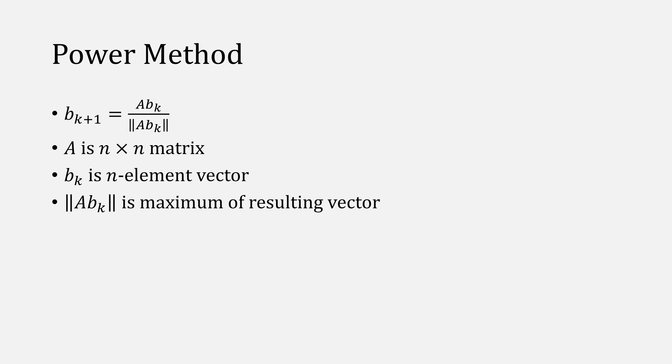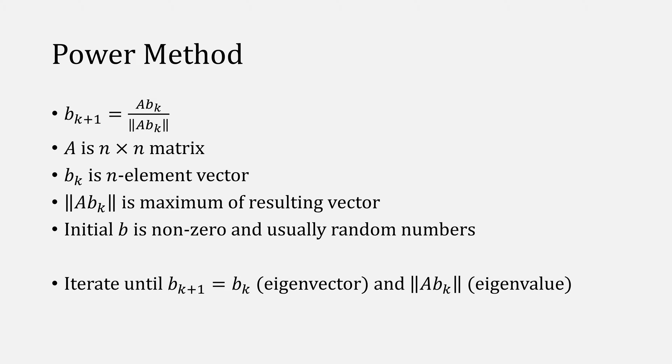Let's look at a common approach to finding eigenvalues, which is called the power method, which is given by this function here. Don't worry, we're going to go through some examples. Here, a is an n by n matrix, and b is an n element vector. We're going to take the norm, which is simply the maximum of this matrix multiplication, and to start with, we'll usually use random numbers for b. We'll repeat the process until b is equal to itself, and then that's when we find our eigenvector and our eigenvalue.